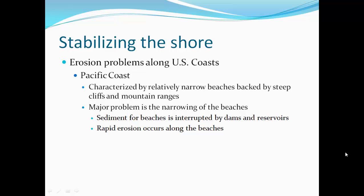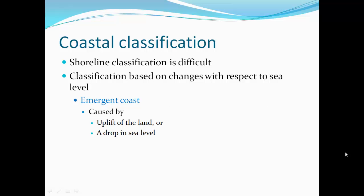On the Pacific coast, it's characterized by relatively narrow beaches backed by steep cliffs and mountain ranges. Major problems include narrowing of beaches, sediment supply interrupted by dams and reservoirs, rapid erosion along beaches, and cliff falls.